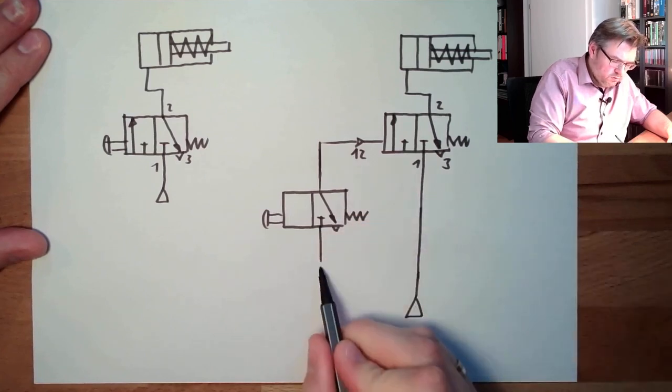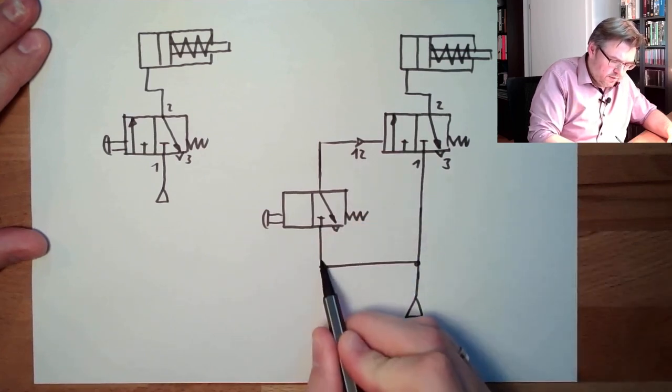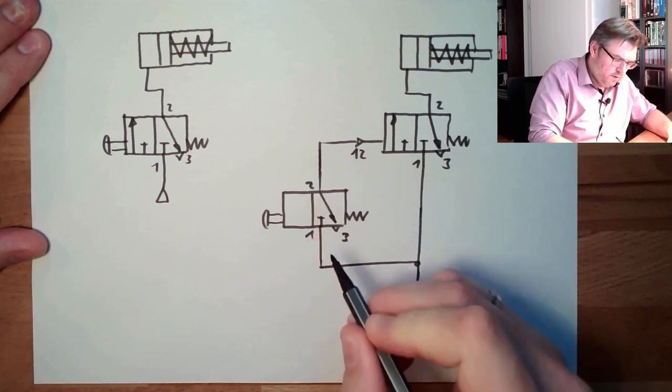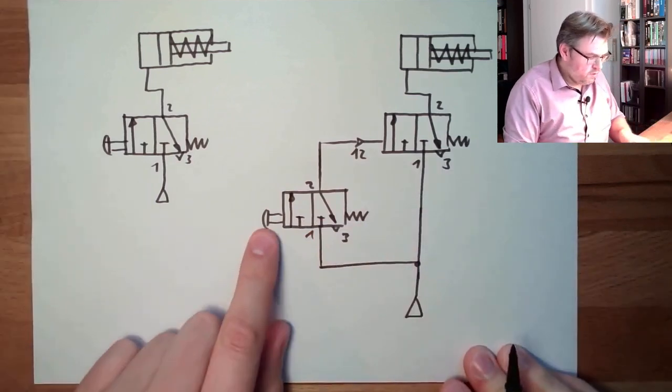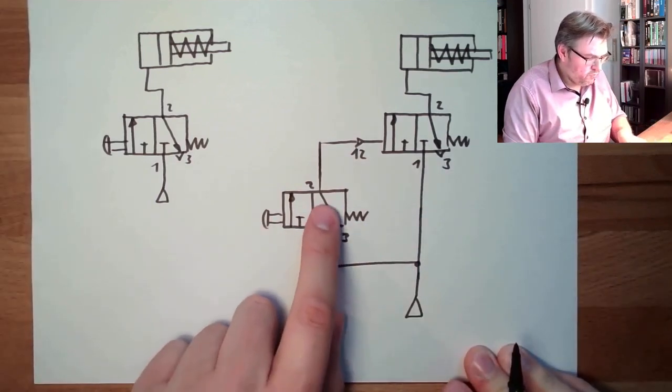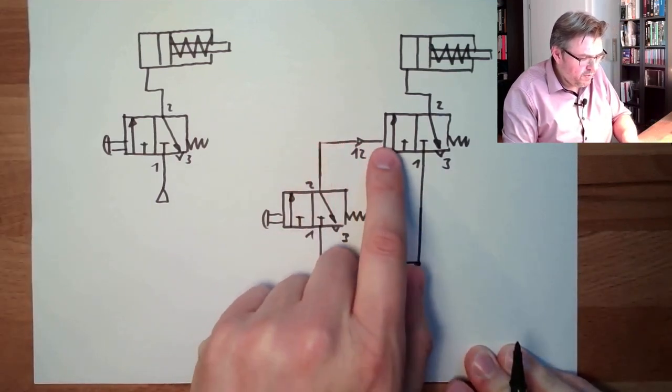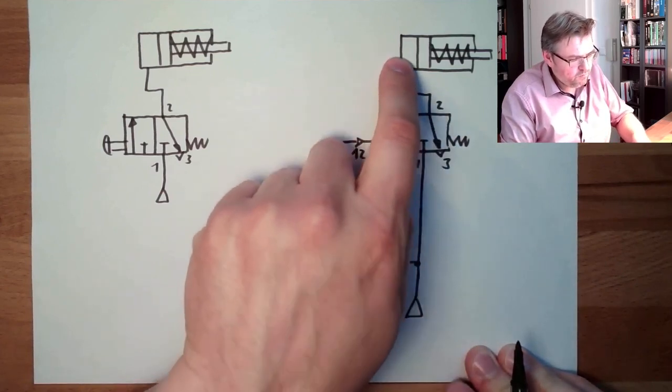So here is the connector one, two. This is a pneumatically controlled valve. And here we are also connected to the pressure source, one, two, three. So if we push here, now one and two are connected, this is operated, this will push this, and we are going out.